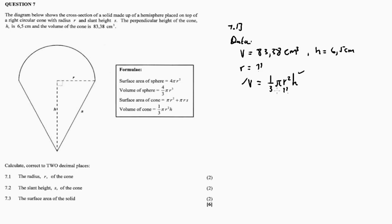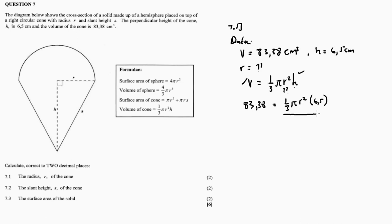h = 6.5 centimeters. I have the volume and the height, so I'm looking for r. Substitute h and V, then manipulate the formula to make r the subject. Substitute V = 83.38, so 83.38 = (1/3)πr² × 6.5.